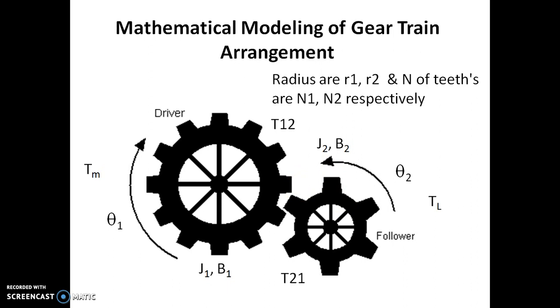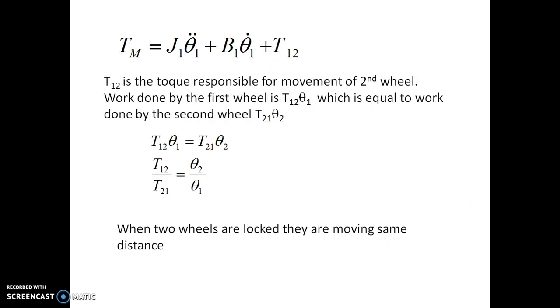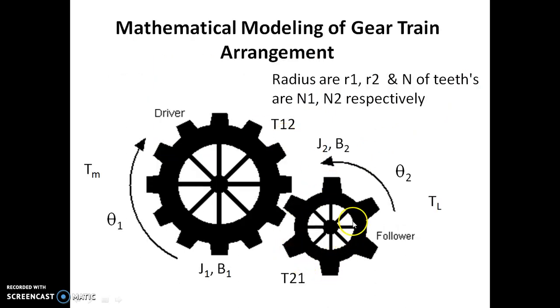Now let us calculate the work done by the first wheel. Work done by the first wheel is T12*theta1, which is equal to the work done by the second wheel. The second wheel is having angular displacement of theta2, so the amount of torque on it is different from T12, so we are considering it as T21. As the first wheel is actually working on the second wheel, the amount of work done is the same, and we can consider that T12*theta1 equals T21*theta2.